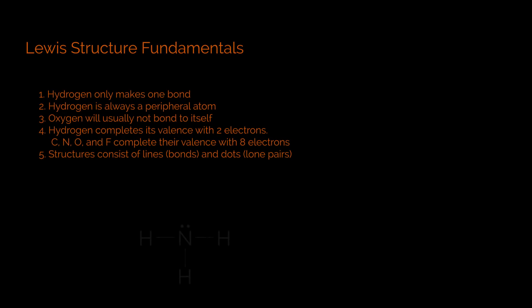Rule number one is that hydrogen is only going to make one bond. Rule number two, also with hydrogen, is that you're only going to find hydrogen as a peripheral atom. What that means is that it's going to be basically on the outside of the structure. We're going to see that time and time again today.